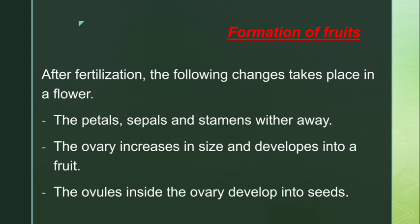The petals, sepals and stamens wither away — they dry and fall off. The ovary increases in size and develops into a fruit. The ovary, which had ovules inside it, becomes large and changes into a fruit.